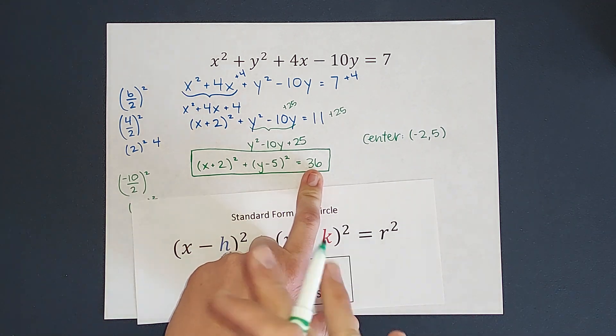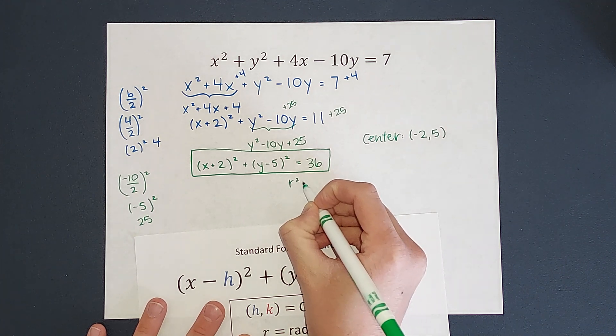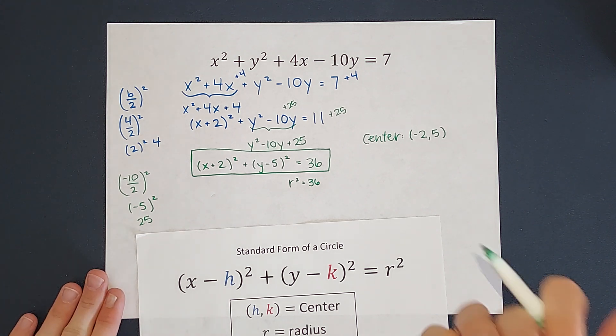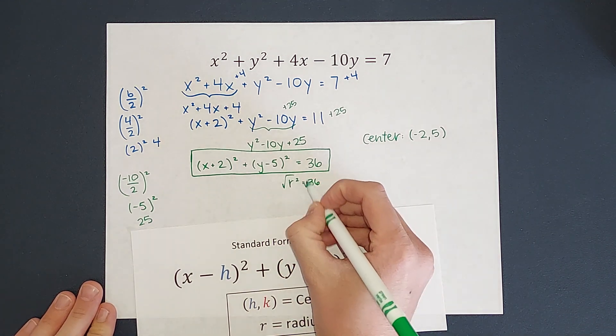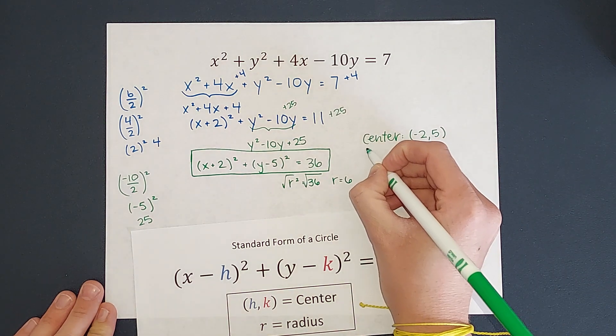My radius is what it's equal to, sorry, my radius squared is what it's equal to, right? So I know my radius squared is 36. So what's just my radius without the squared? Well, I'm going to take the square root, right? And I get that my radius is 6.